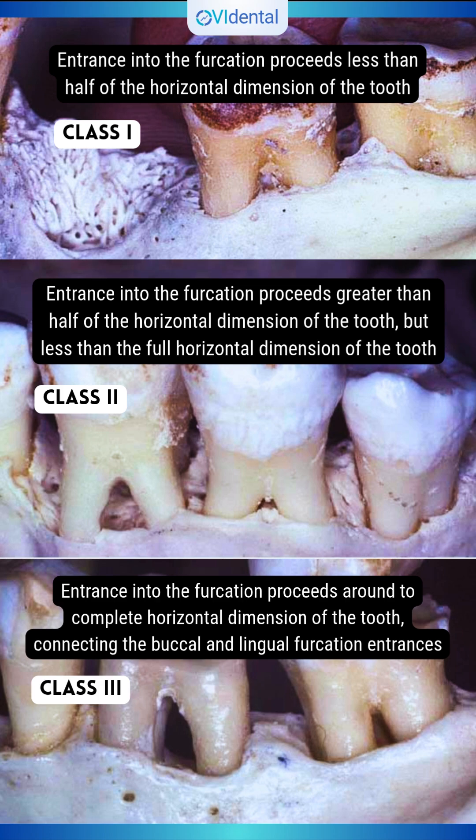Horizontal furcation involvement. Class 1: Entrance into the furcation proceeds less than half of the horizontal dimension of the tooth. Figure 1.